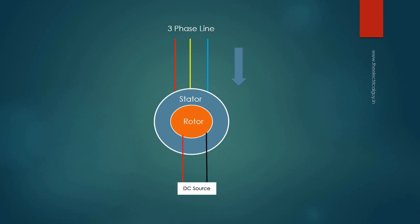If we excite the rotor with DC current, the rotor's MMF will help produce part of the required flux and less reactive power will be drawn. If we raise the excitation of the rotor further, it will produce all the required flux by itself and no reactive power will be drawn from the three-phase line — meaning the power factor of the motor is unity. If we overexcite the rotor, the stator will actually start delivering reactive power, and the motor behaves like a source of reactive power, just as if it were a capacitor.